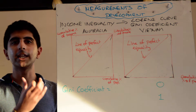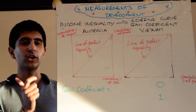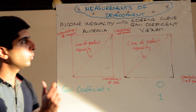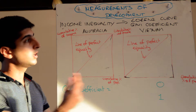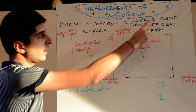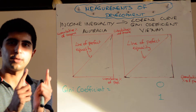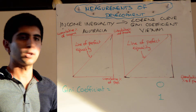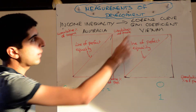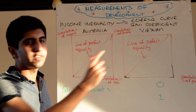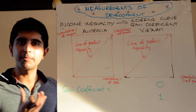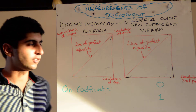So how do we measure income inequality in economics? Well, we use two things. We use the Lorenz curve to give us a visual interpretation of income inequality, and we use the Gini coefficient to give us a mathematical interpretation.